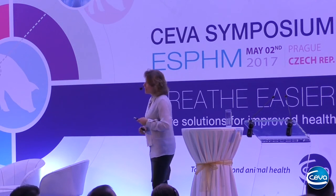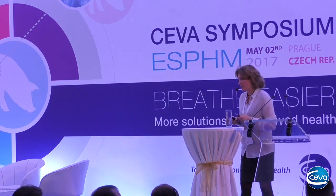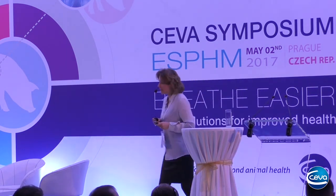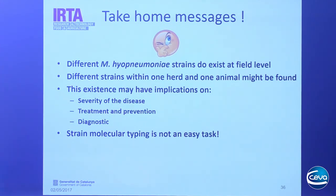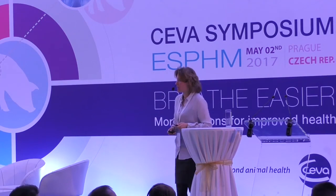In summary, after all this information and unanswered questions, I would like to remind you that different Mycoplasma strains do exist at the field level, that within a farm we can detect one or more than one strain per animal, and that this existence may have different implications for disease severity, treatment, prevention, and most importantly for diagnosis. As you have seen, strain molecular typing is not an easy task. Thank you very much for your attention.